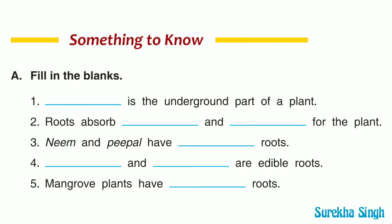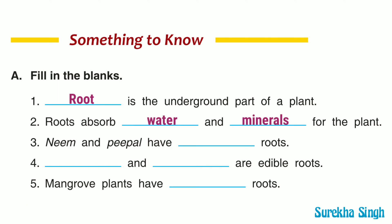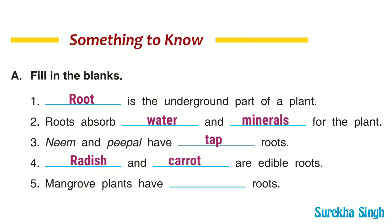Fill in the blanks. 1. Root is the underground part of a plant. 2. Roots absorb water and minerals for the plant. 3. Neem and peepal have tap roots. 4. Radish and carrot are edible roots. 5. Mangrove plants have aerial roots.